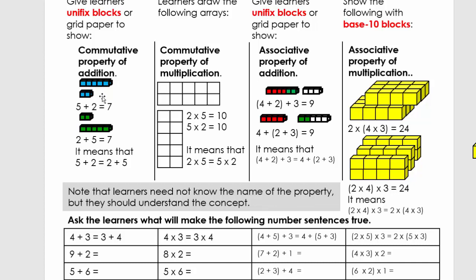The first example is where we have five blocks here and two. So we can say five plus two equals seven. Now we have two blocks and five, so we can say two plus five equals seven. That means five plus two equals two plus five. I want you to stop the video and quickly explain it to an adult.